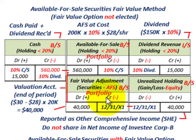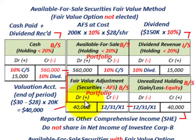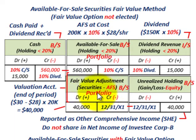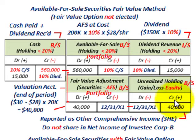Any increases or decreases in our fair value adjustment go into an unrealized holding gain or loss account in equity. That's the key distinction with the regular fair value method — any gains or adjustments go into the equity account on the balance sheet. We debit the fair value adjustment for $40,000, increasing our available-for-sale securities from $560,000 to $600,000 fair value for the portfolio. The unrealized holding gain of $40,000 is credited to equity and sits there until the securities are sold, at which point any gain or loss goes into the income statement.